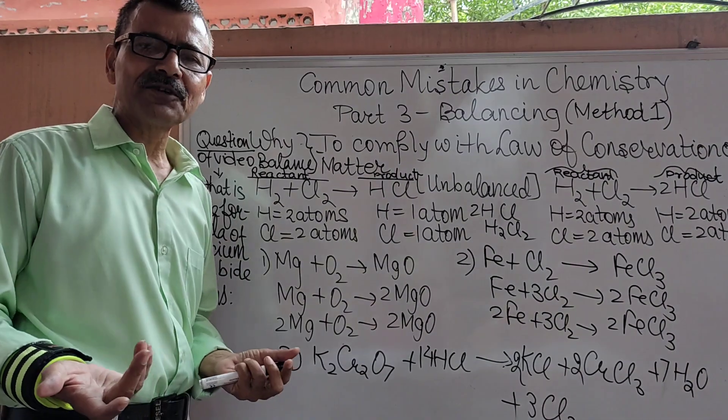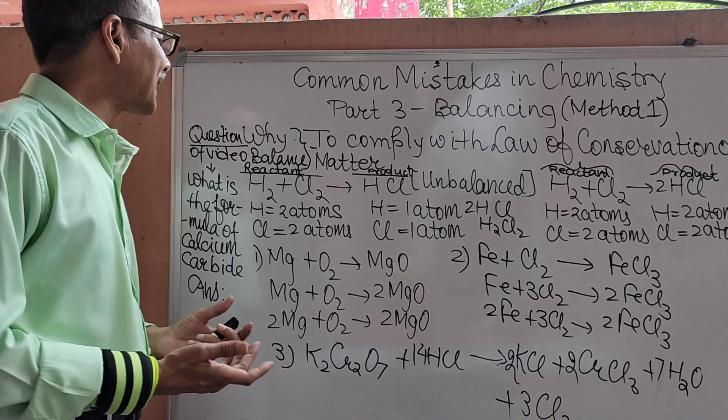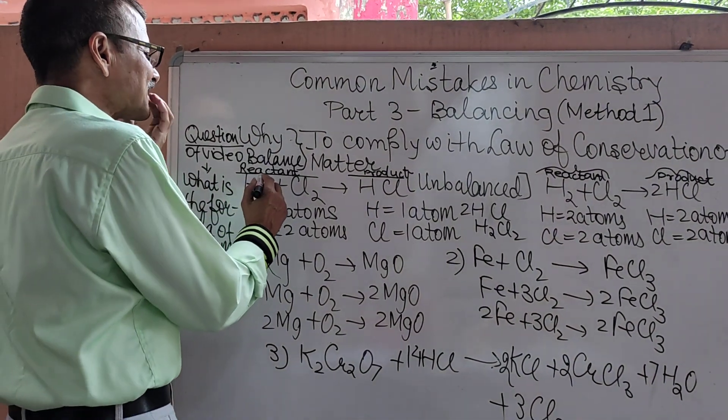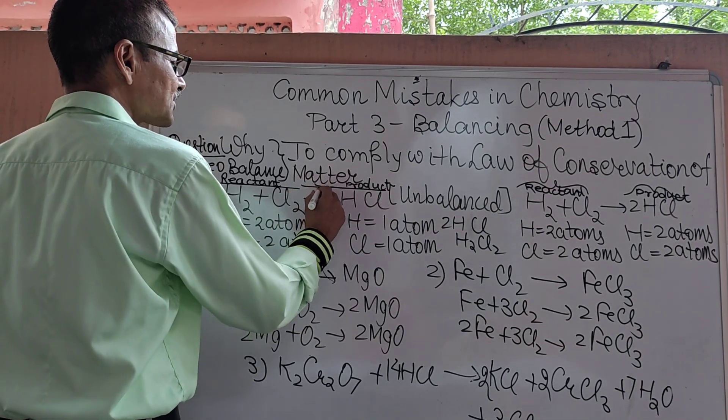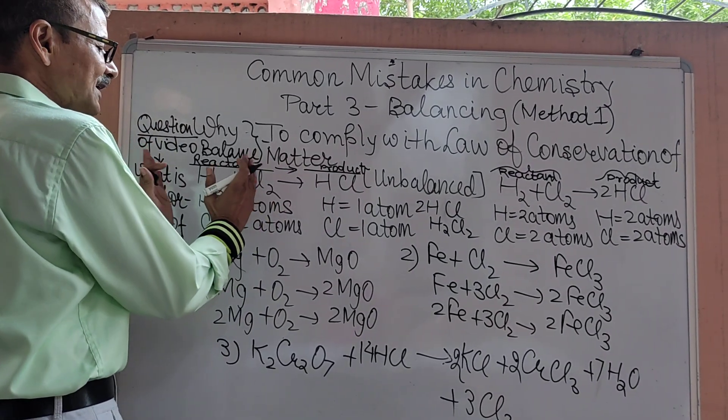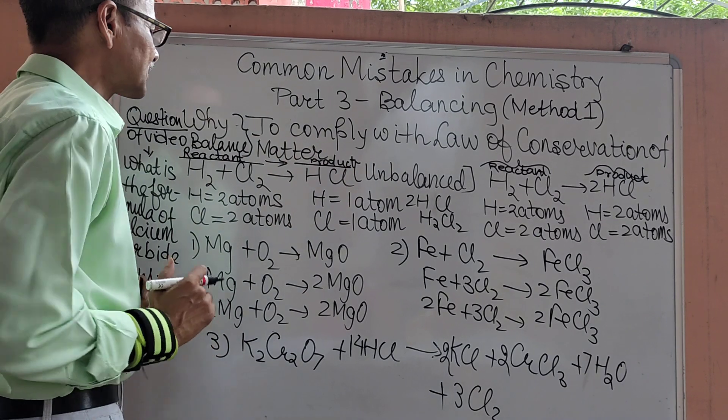Now let's have a look at balanced and unbalanced reactions. A chemical reaction is written where the reactants give us the product. Reactants are on the left hand side, products are on the right hand side.